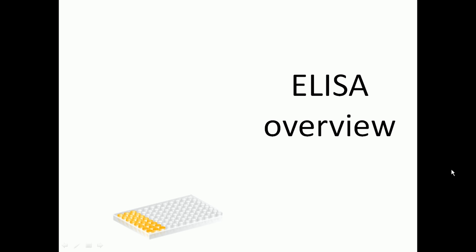ELISA uses a particular type of glassware called a microtiter plate. This microtiter plate contains small well-like structures. Different types of microtiter plates are available — some contain 96 wells, some even more — but usually they contain 96 small wells arranged across the plate. We add the sample first into these particular wells.